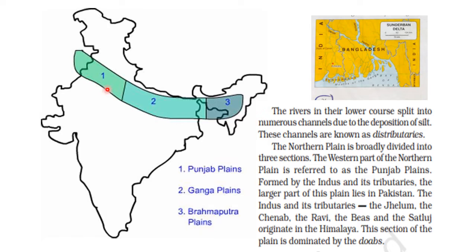The northern plain of India is formed by three major rivers — the Indus, the Ganga, and the Brahmaputra — and their tributaries. Tributaries are the small rivers that join the main rivers. In the lower course, rivers split into numerous channels due to deposition of silt; as rivers move forward, alluvium accumulates and due to huge deposition of silt, the river water splits into smaller channels called distributaries.